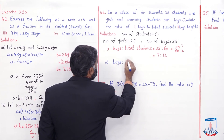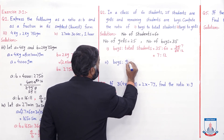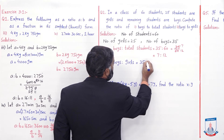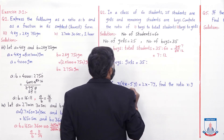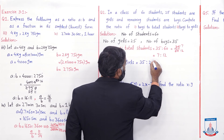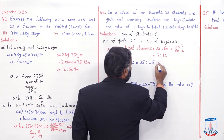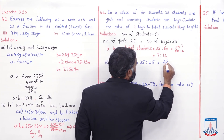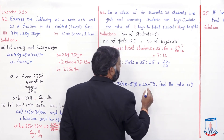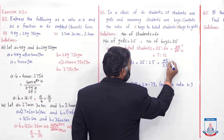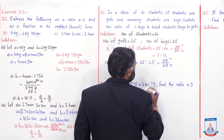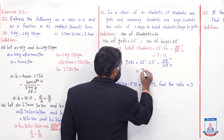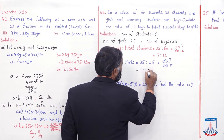اسی طرح second part میں boys to girls کی ratio find کریں گے۔ Boys:girls = 35:25۔ Fraction: 35/25۔ 5 کے table میں cutting: 5×7=35, 5×5=25۔ تو boys:girls = 7:5۔